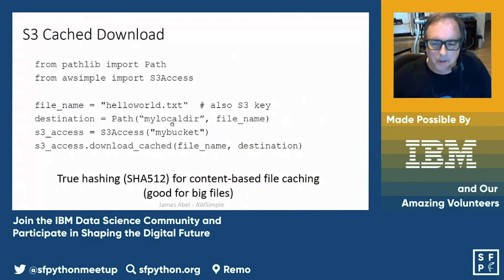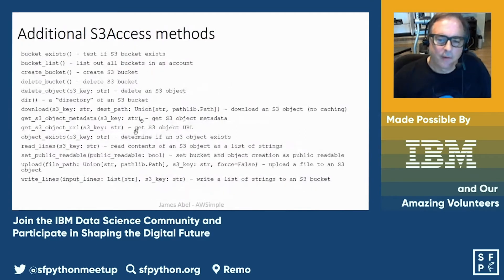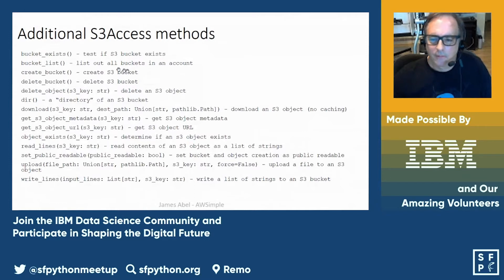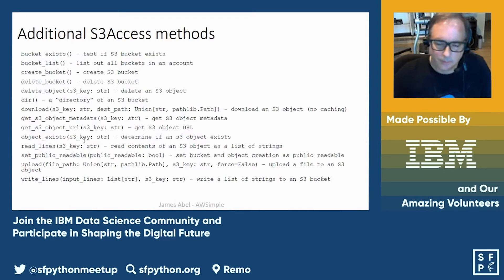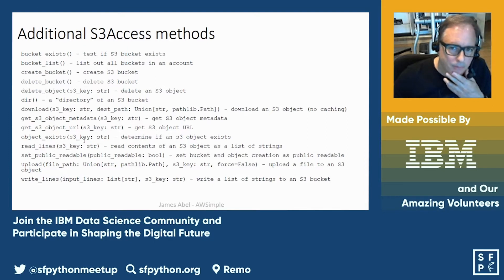This is just how much code it takes to download from S3 using AWSimple. There are a few different methods available in the S3 Access class: you can test if a bucket exists, get the list of all buckets in an account, create and delete buckets, do a directory listing in a bucket, download files, get metadata, read lines or read and write a collection of lines, and also make objects publicly readable, which you'd want for publishing to the world. These are the basic access methods I've found useful for my projects.